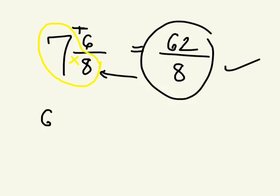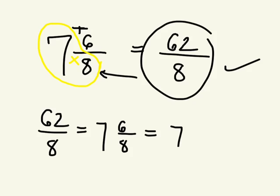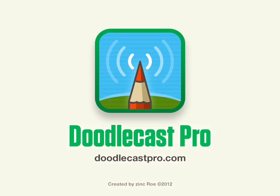And we write the denominator that we already have and it's 62 over 8. So we just found that 62 over 8 is equal to 7 and 6 eighths, which is also equal to 7 and 3 quarters, which is also equal to 31 over 4.